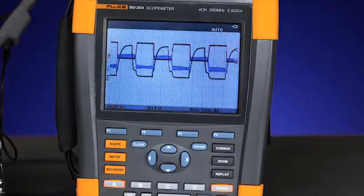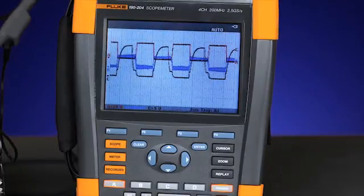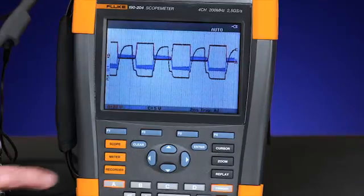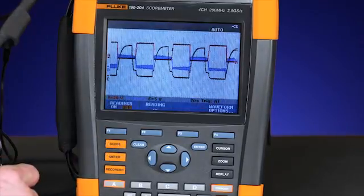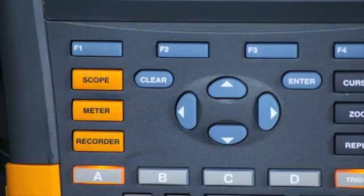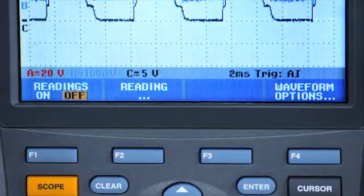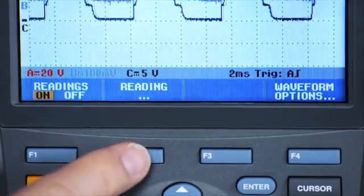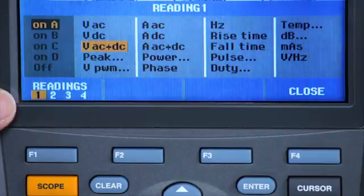For the first measurement, we'll be using the voltage probe on channel A and the current probe on channel B. We'll set up the scope to automatically measure the power across the switch. Press the scope button, then readings on, then choose reading 1 to measure power across A and B.